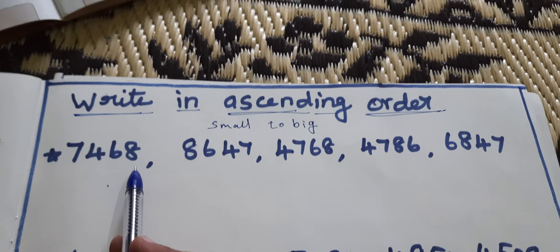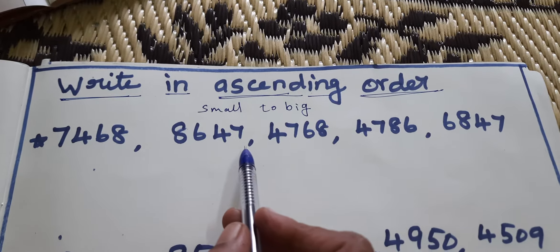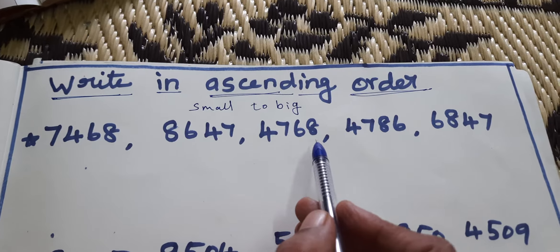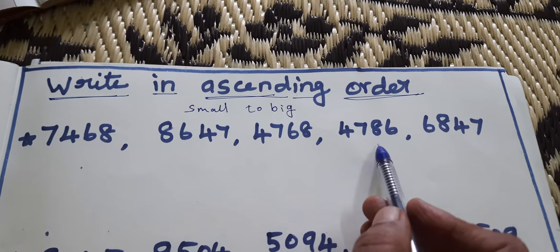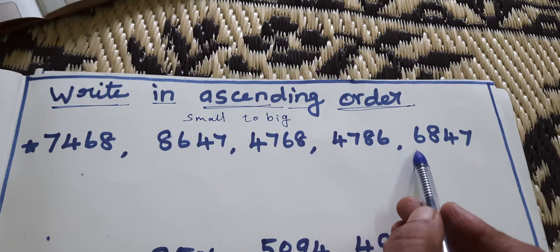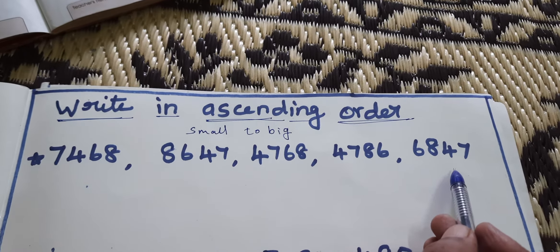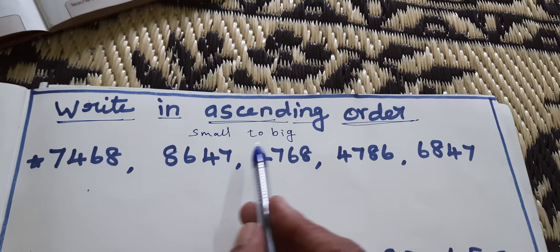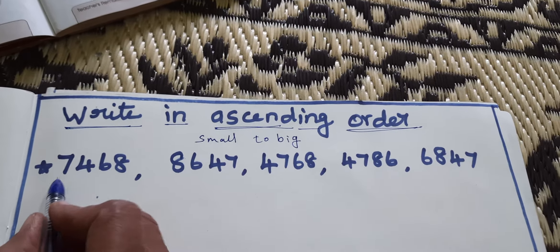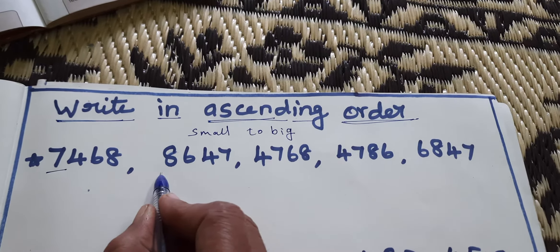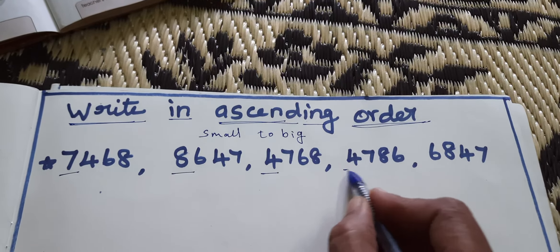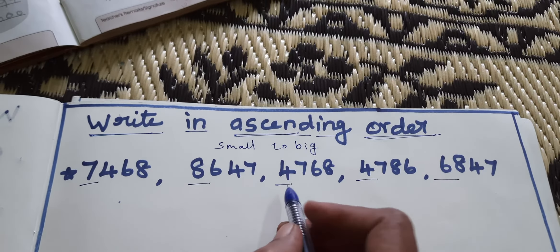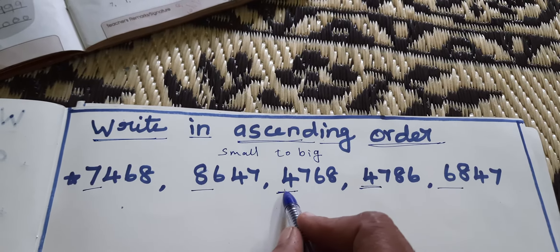We have the numbers: 7468, 8647, 4768, 4786, and 6847. Which one is the small number? Ascending Order means small to big. Looking at the thousands place: 7000, 8000, 4000, 4000, 6000. Which one is the small number? 4000 and 4000 — both are the same.